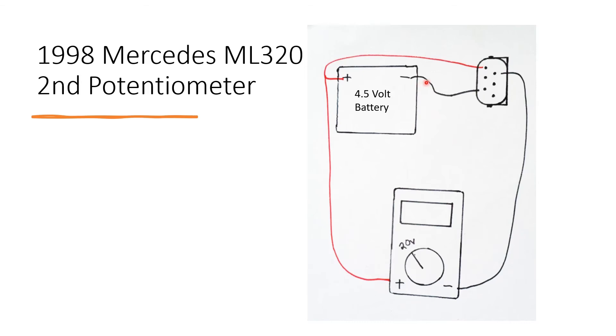The negative from the battery will connect to the bottom left pin, and the negative from the multimeter will connect to the top right pin. I should state that this pin right here, the middle left, will never be used in this test.